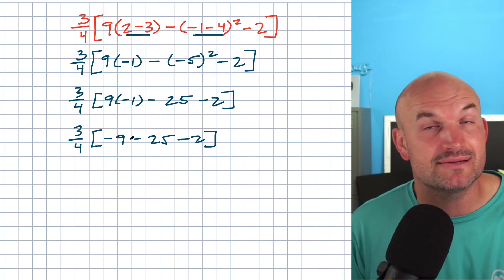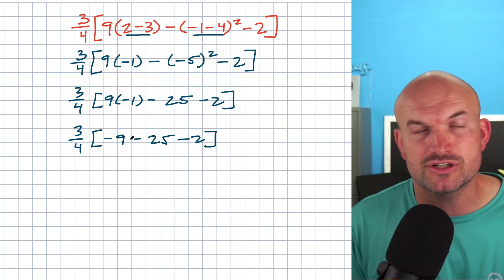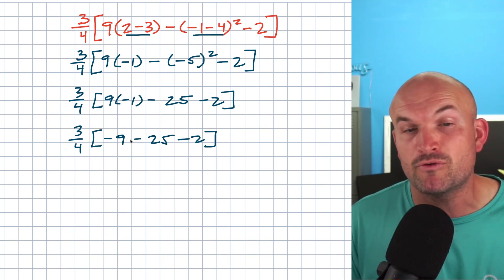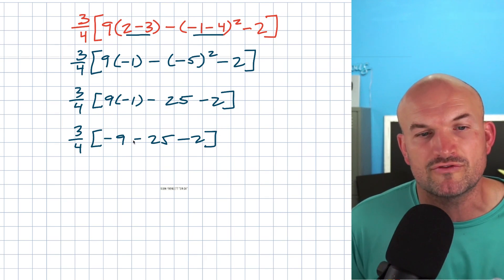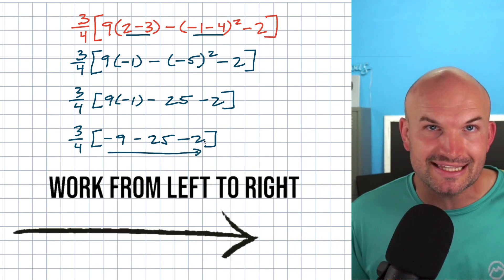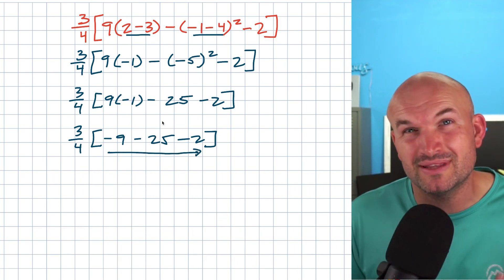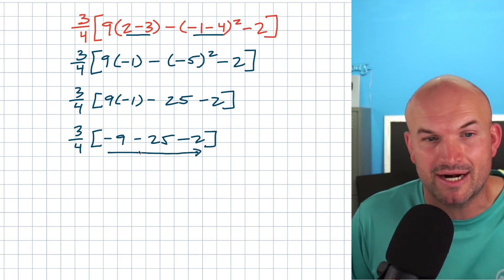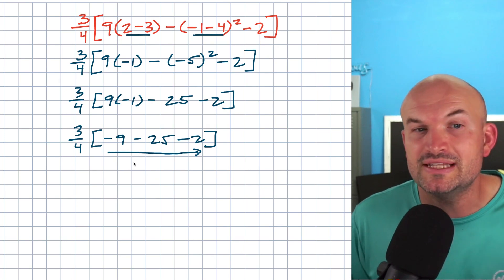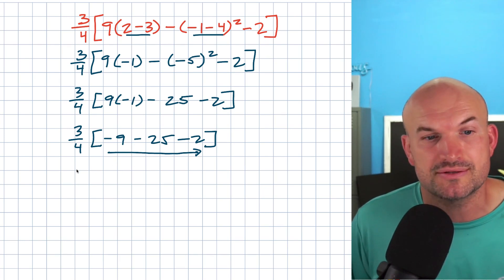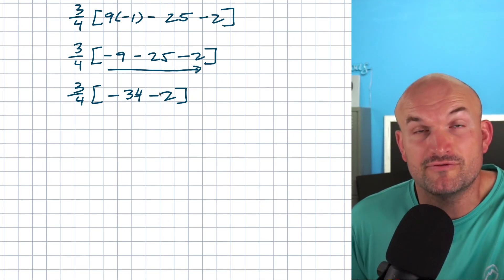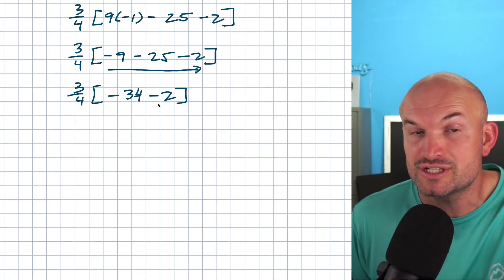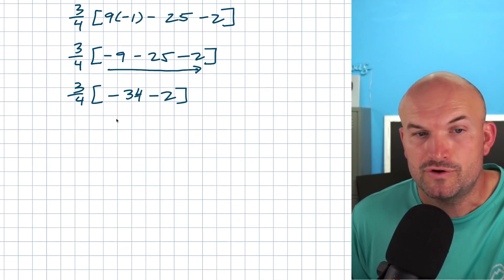What do we do first when we're both subtracting? If you had some addition and subtraction, don't just assume that addition is before subtraction. You always want to make sure you work from left to right. Working from left to right using these operations, all I've got to do is subtract negative 34 minus two, which is going to give me a negative 36.